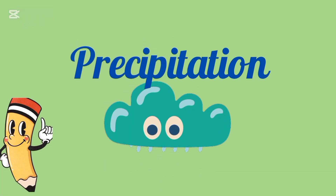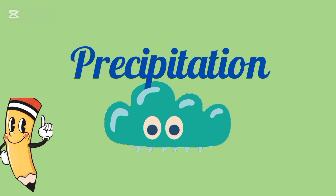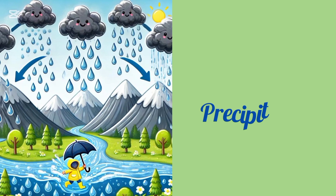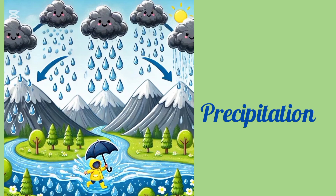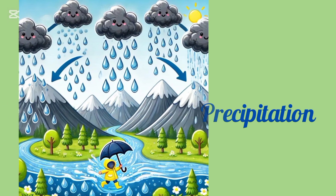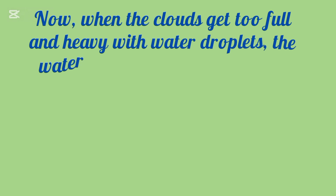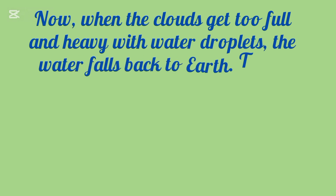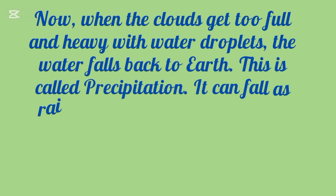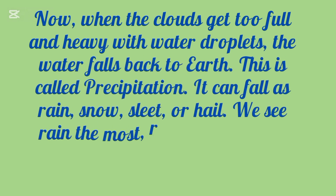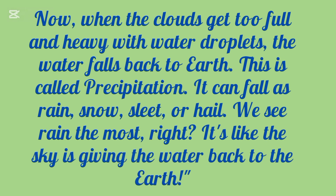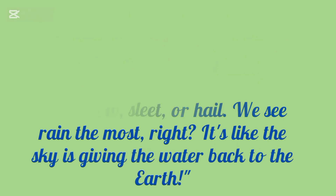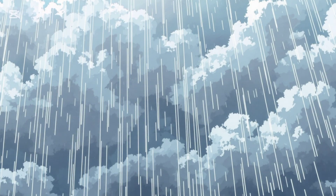Now, precipitation. When the clouds get too full and heavy with water droplets, the water falls back to earth. This is called precipitation. It can fall as rain, snow, sleet, or hail. We see rain the most, right? It's like the sky is giving the water back to the earth.